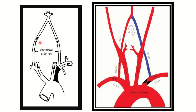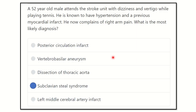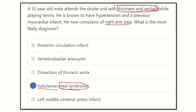This picture confirms the same mechanism: when the left subclavian artery is occluded, blood flows back from the right side through the vertebral artery into the left subclavian circulation. So our answer is subclavian steal syndrome. In subclavian steal syndrome, narrowing of the subclavian artery causes blood to flow in the opposite direction, leading to right arm pain as well as reduced cerebral blood flow, causing dizziness and vertigo. Thank you.